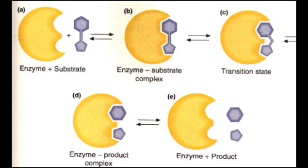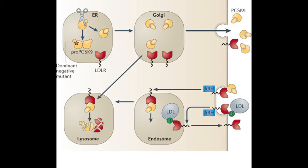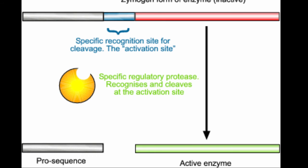Enzymes like pepsin are created in the form of pepsinogen, an inactive zymogen. Pepsinogen is activated when chief cells release it into the gastric acid, whose hydrochloric acid partially activates it. Another partially activated pepsinogen completes the activation by removing a peptide, turning the pepsinogen into pepsin.